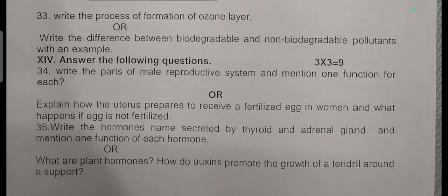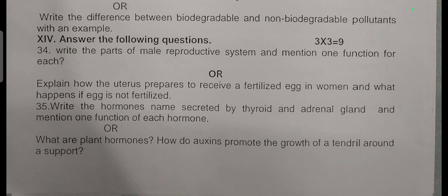Three mark question: Write the parts of male reproductive system and mention one function for each. Or explain how the uterus is prepared to receive the fertilized egg in humans and what happens if the egg is not fertilized. Write the hormone names secreted by the thyroid and adrenal gland and mention one function of each hormone. Or what are plant hormones? How do auxins promote the growth of tendrils around the support?